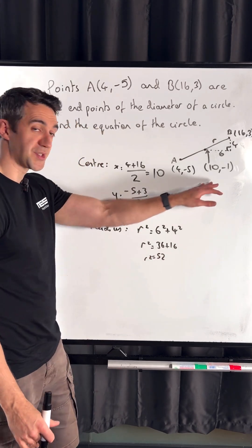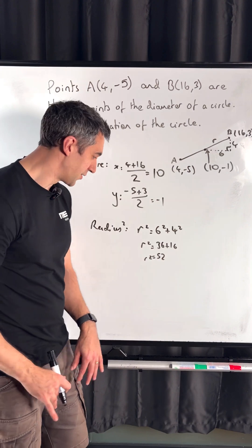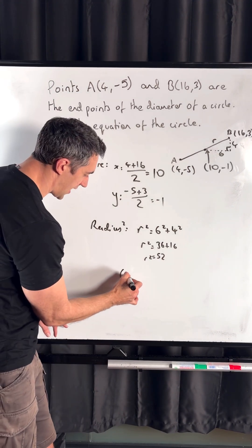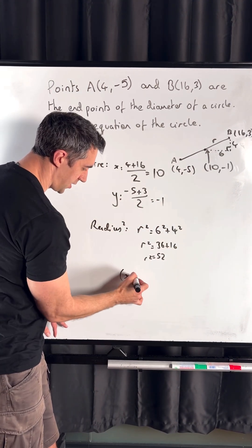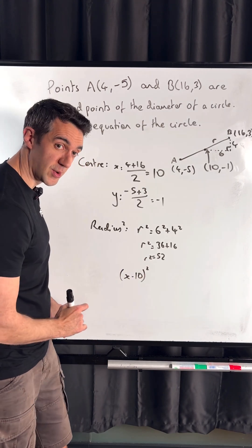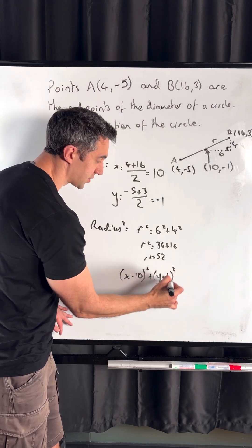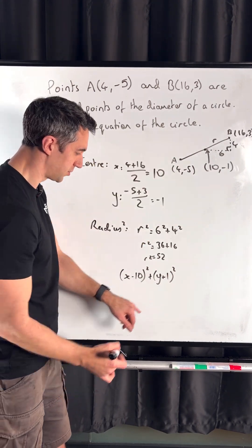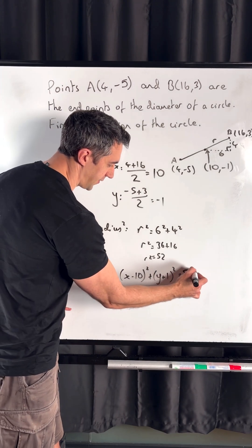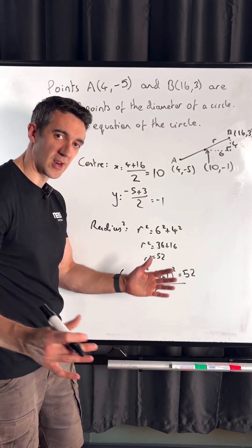Now we have our center and radius squared, so we can write the equation. (x - 10)²—remember to switch the sign from positive to negative—plus (y + 1)²—switching the sign from -1 to +1—equals 52. There's our equation.